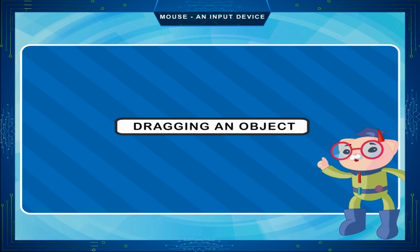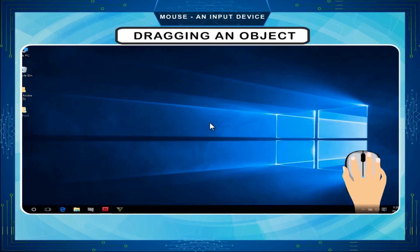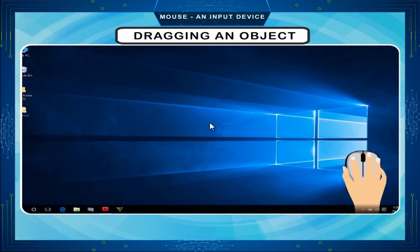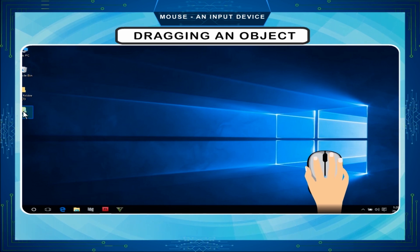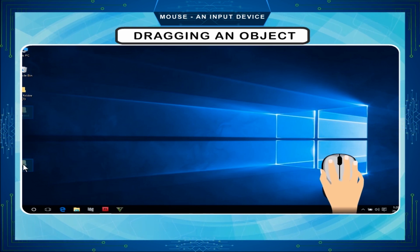Dragging an object. Simple dragging means moving the object from one place on the screen to another. We can drag an object on the screen with the help of the mouse. Steps for dragging: place the pointer on the item you want to drag, press and hold down the left mouse button while you move the mouse pointer to another place, then release the mouse button after dragging the item to the new place.